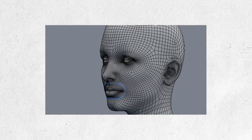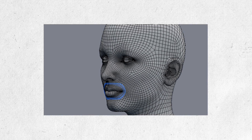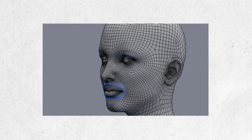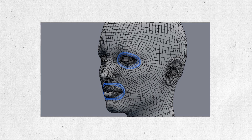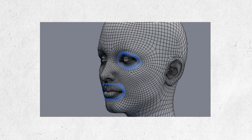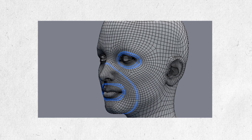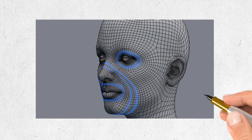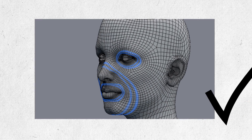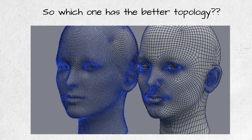Notice here in example two, the polygons flow around the major facial features of the model. These edge loops not only support the shape of the model better, they also allow for great deformation during animation. Over time you'll be able to better identify which models have good topology and which don't.